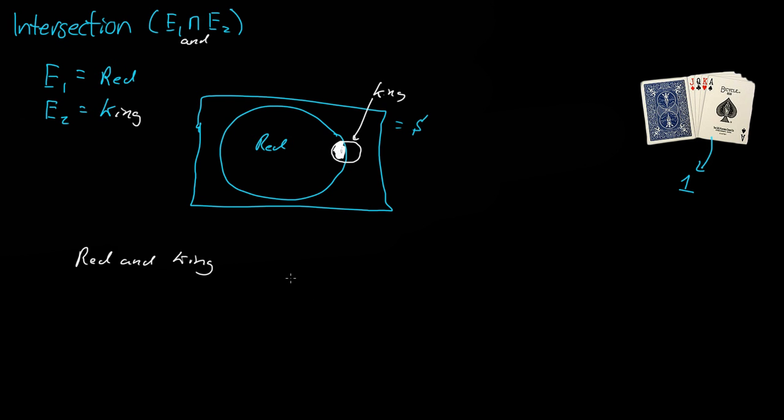So the probability of the intersection of E1 and E2 is equal to this area for a Venn diagram, divided by the total area.